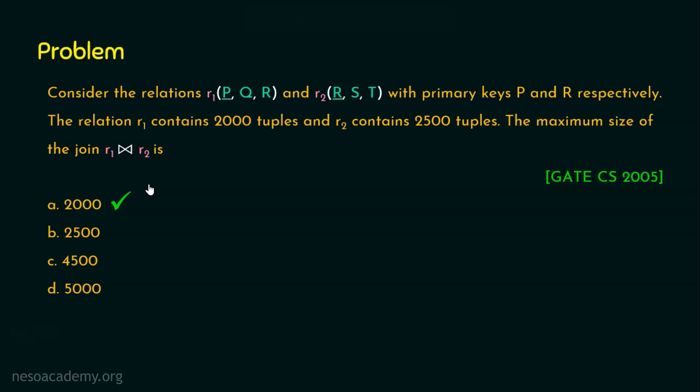I would advise you to try manually populating the values for the relations R1 and R2. Please note, for R1 relation, the value in the attribute R can be anything because it's not a primary key attribute here in R1 relation. Whereas, in relation R2, the attribute R is the primary key attribute. So manually create some scenarios and try getting the maximum value. In this gate question, they have mentioned relation R1 contains 2000 tuples and relation R2 contains 2500 tuples. I would request you to try with R1 containing 3 tuples and R2 containing 5 tuples, try creating some scenarios and ensure you are getting the maximum as 3 only.